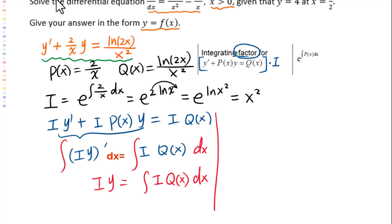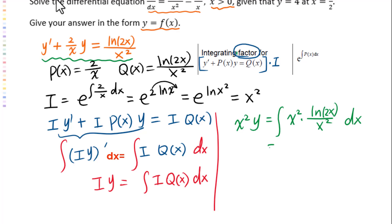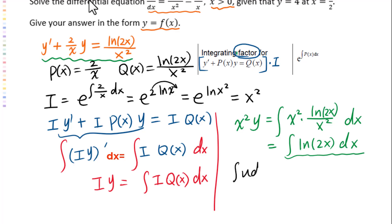In this equation, i equals x squared. So x squared times y equals the integral of x squared times Q of x, which is natural log of 2x over x squared dx, which simplifies to the integral of natural log of 2x dx. For this integral, we will use integration by parts: u dv equals u times v minus the integral of v du.